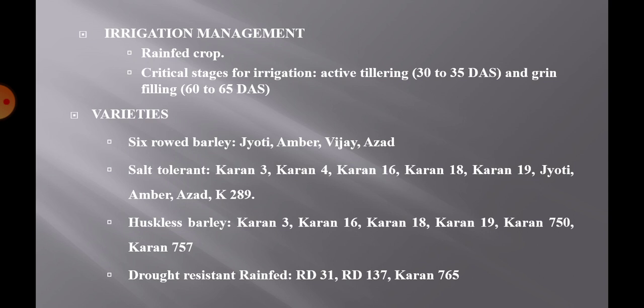Irrigation management: Barley is mostly grown as a rain-fed crop but it also responds very well to irrigation. Generally 2 to 3 irrigations are recommended. Two irrigations at critical growth stages: active tillering, which comes at 30 to 35 days after sowing, and grain filling stage, which comes at 60 to 65 days after sowing.